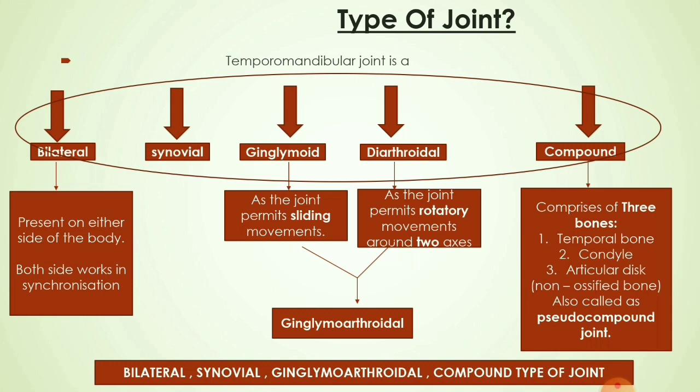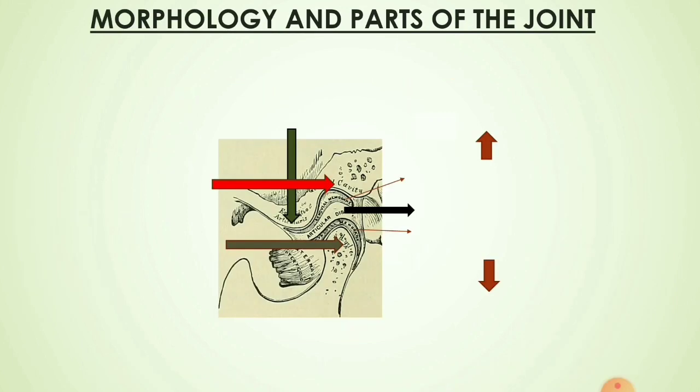Combining all this, we can conclude that the temporomandibular joint is a bilateral synovial ginglymoarthrodial compound type of joint. Moving on to the morphology and parts of the joint.